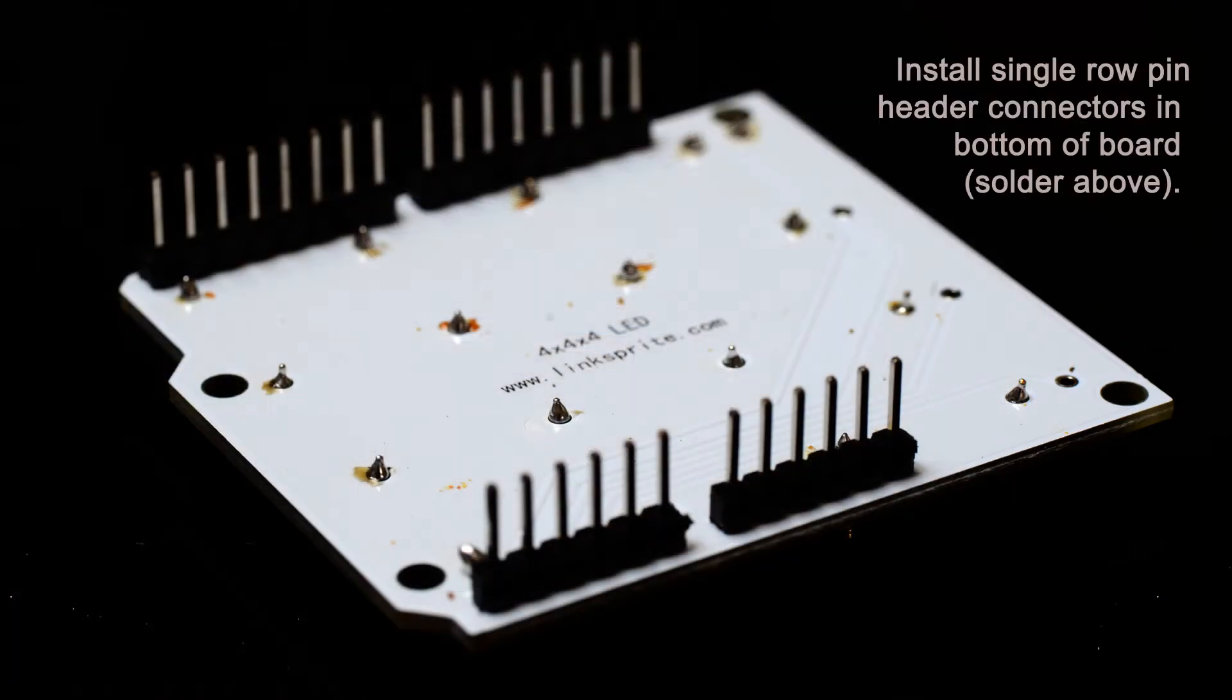Take the LinkSprite board with the printing up, this is actually the bottom, and install the header pins, soldering them to the opposite side of the board.